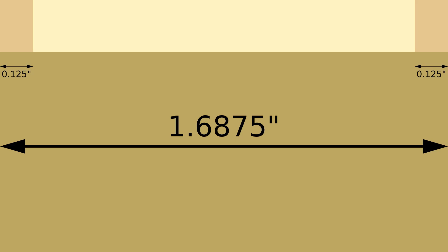A common edge distance for guitar strings is 1/8th of an inch, a bit more than 3 millimeters. For bass guitars a little more — 5/32nd for example, roughly 4 millimeters. Now it's fairly easy to spread our string center lines evenly and start filing slots.